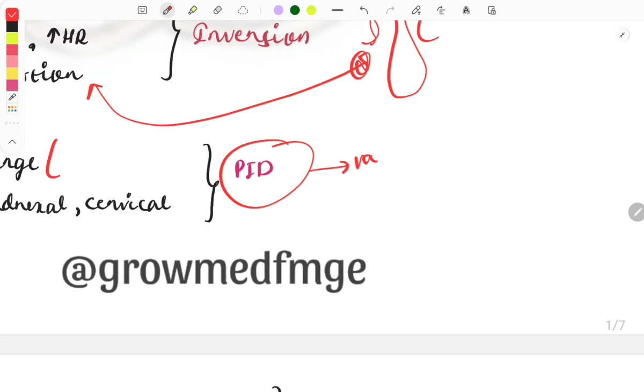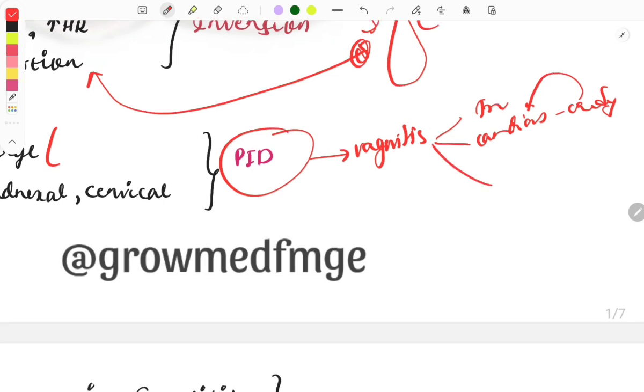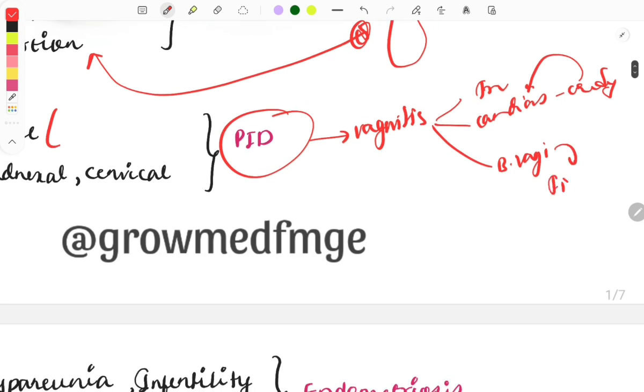There are three types of vaginitis: trichomoniasis causing vaginitis, candidiasis which gives curd-like discharge - if curd-like discharge is there, then it is a hint word for candidiasis - and bacterial vaginosis. In bacterial vaginitis they will describe hint words like fishy odor, clue cells, and clear discharge.